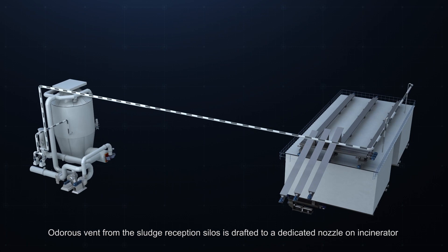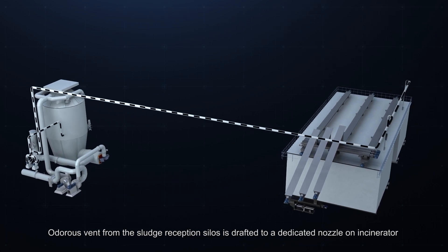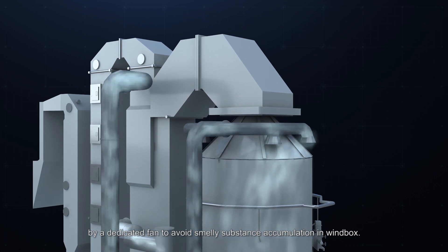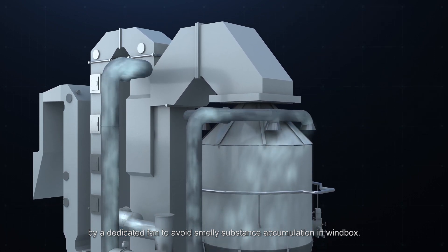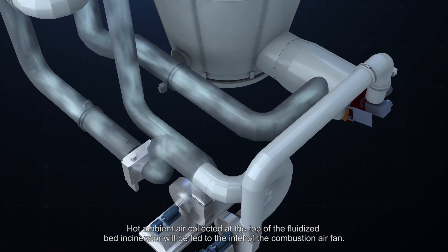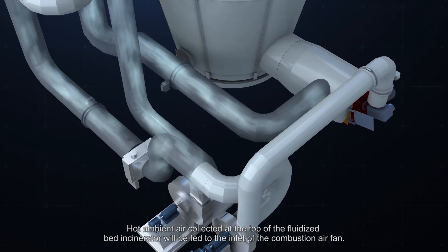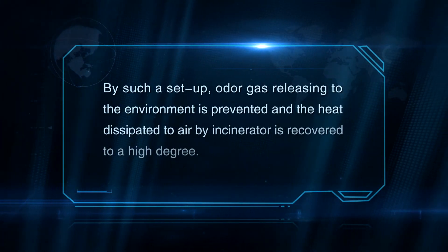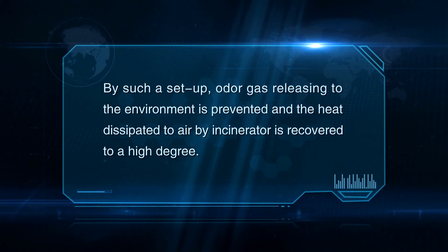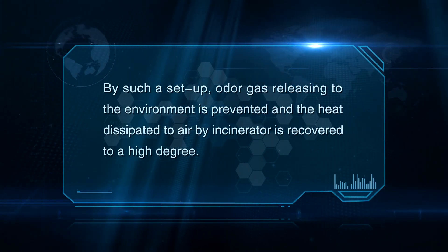Odorous vent from the sludge reception silos is drafted to a dedicated nozzle on incinerator by a dedicated fan to avoid smelly substance accumulation in windbox. Hot ambient air collected at the top of the fluidized bed incinerator will be fed to the inlet of the combustion air fan. By such a setup, odor gas releasing to the environment is prevented and the heat dissipated to air by incinerator is recovered to a high degree.